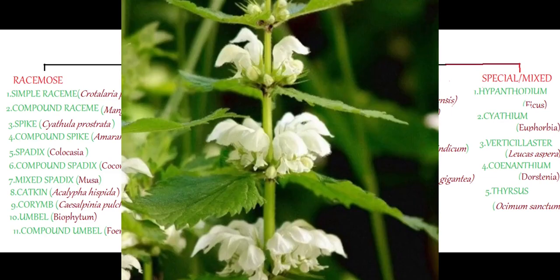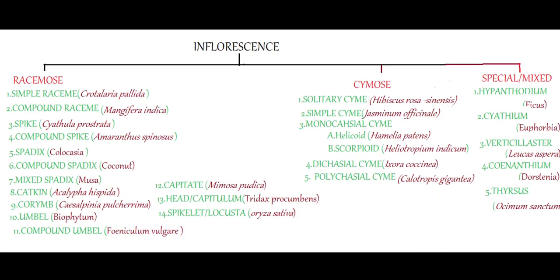The third type is verticillaster — the characteristic inflorescence of Lamiaceae. Here Lamiaceae members possess opposite leaves. From the axil of these opposite leaves two inflorescences develop. During the initial stage it will be a dichasial cyme, then reduced into a scorpioid cyme. These inflorescences present on the axil of leaves form a false whorl or verticil around the stem, hence the name verticillaster. Example: Leucas aspera.